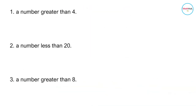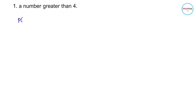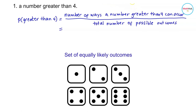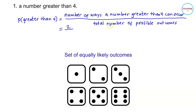Using the same scenario of rolling a die, we want to find the probability of rolling a number greater than 4, the probability of rolling a number less than 20, and the probability of rolling a number greater than 8. To find the probability of rolling a number greater than 4, we divide the number of ways it can occur by the total possible outcomes. We have 5 and 6, which are greater than 4, so that's 2 ways. The total outcomes is 6, so the probability is 2/6, which reduces to 1/3.